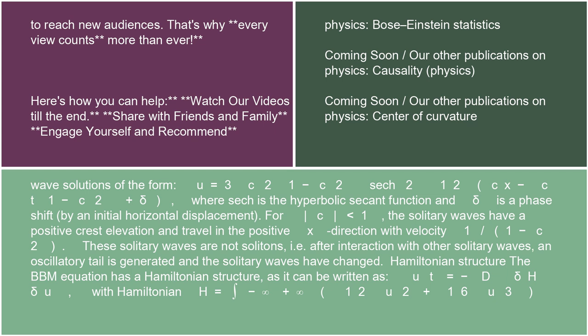u = 3c²/(1-c²) sech²[1/2(cx - ct√(1-c²) + δ)], where sech is the hyperbolic secant function and δ is a phase shift by an initial horizontal displacement. For c<1, the solitary waves have a positive crest elevation and travel in the positive x direction with velocity 1/√(1-c²).